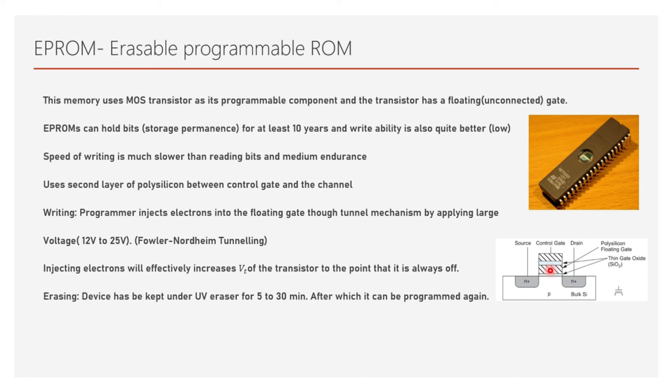Erasing happens by keeping the device under a UV eraser for at least 5 to 30 minutes, after which it can be reprogrammed again. This is a very slow process — 5 to 30 minutes is too much for modern systems. It also has issues such as it cannot be used in environments with electrical noise or radiation, because that affects the electrons, causing them to lose energy or reach higher energy states, creating problems. Because of this it is not used in many products nowadays.